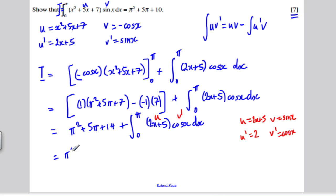I keep π squared plus 5π plus 14. Then I get plus uv, which is 2x plus 5 times sine x, evaluated between 0 and π, minus u'v. That's 2 times sine x. I'll take the 2 out, giving minus 2 times the integral between 0 and π of sine x with respect to x.